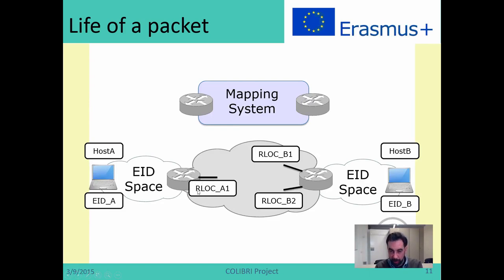One has RLog1, and the other one has two connections with the internet, RLogB1 and RLogB2. Now I'm going to explain how a packet goes from host A to host B.